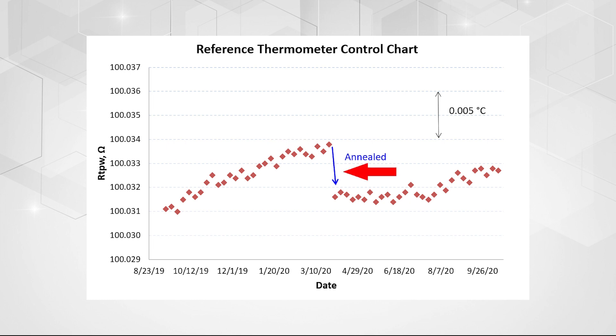The annealing process helps to relax the pent-up stresses in the platinum wire and burn off oxidation. Through this process, resistance values return to a more normal range as shown in the sample data.